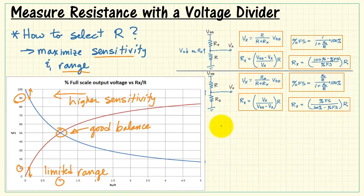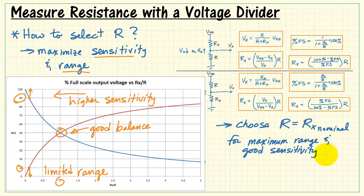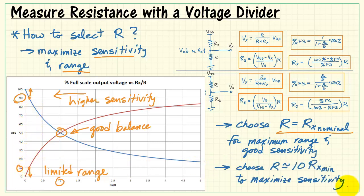So to summarize, select R to be the nominal value of your Rx value for maximum range and good sensitivity. Now here's another situation. Suppose you know that your resistance Rx has some minimum value and it just gets larger. In this case, we would like to maximize the sensitivity and the range at the same time. We can do that by choosing R to be roughly 10 times the minimum value of our unknown resistance. And that maximizes our sensitivity and range.